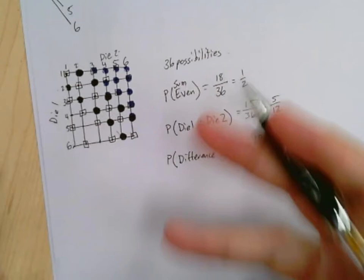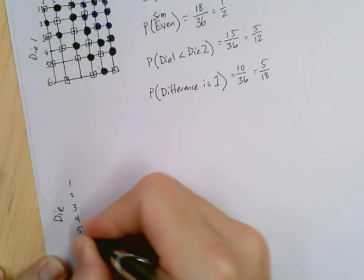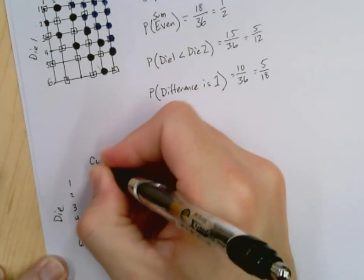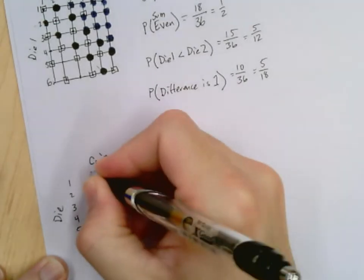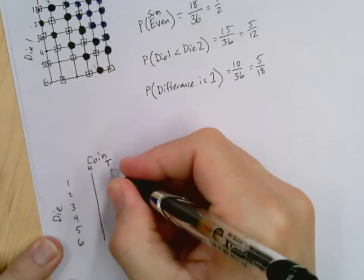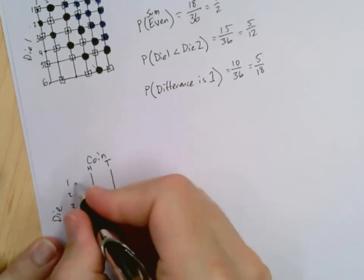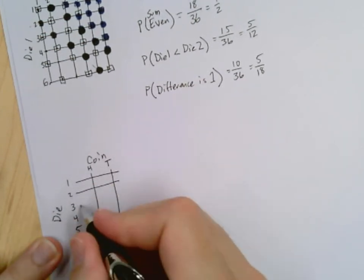So you do your die on the side. The die would be one, two, three, four, five, six. And then your coin would go right here, which would be heads or tails. Again, you draw a line for each one. There's your heads, tails, and there's your one. You can make them as long as you want. It doesn't have to be a nice, even square grid like this.